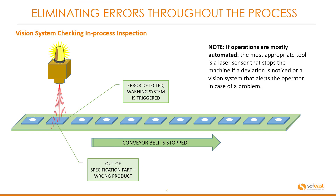Let's have a look at a simple vision system checking in-process inspection. We have parts moving along a conveyor belt between one process and the other. The vision system is checking for correct or incorrect parts as they come through the conveyor system. Error detection is triggered as a warning because there is no hole in this particular plate — the part is out of specification. The warning system can then alert the operator and stop the conveyor belt to eliminate further process issues. If operations are mostly automated, the most appropriate tool is a laser sensor that stops the machine if a deviation is noticed, or a vision system that alerts the operator in case of a problem.